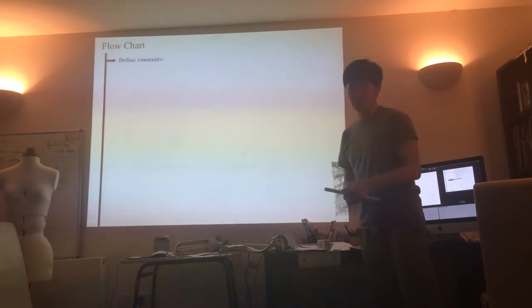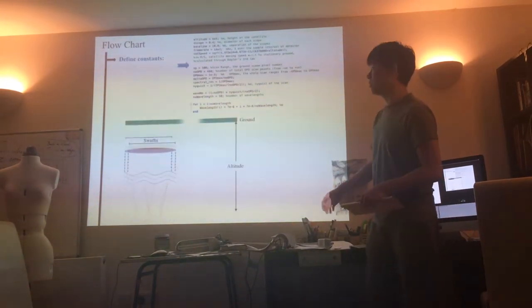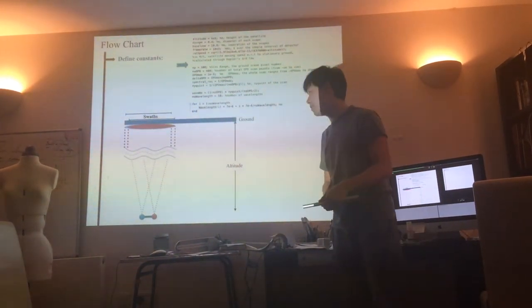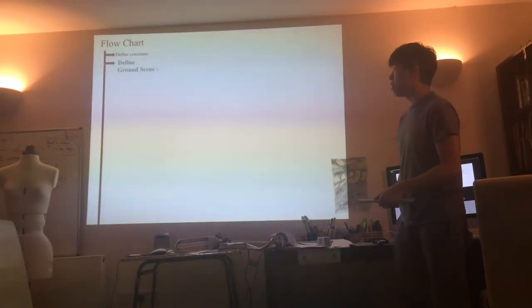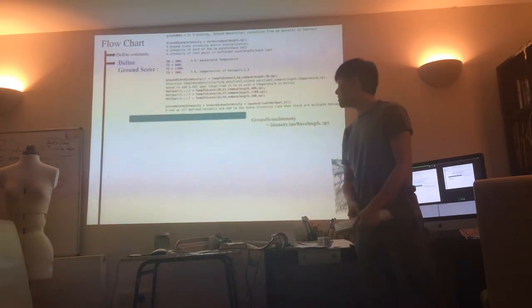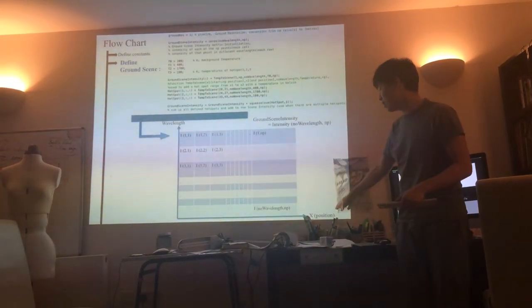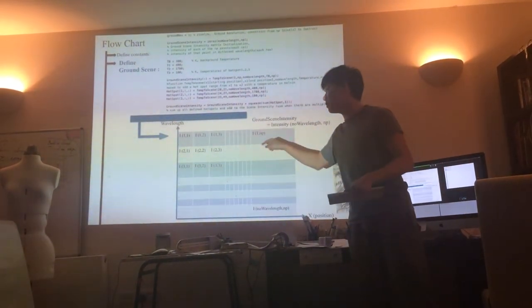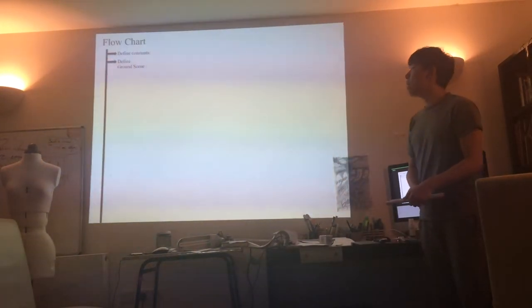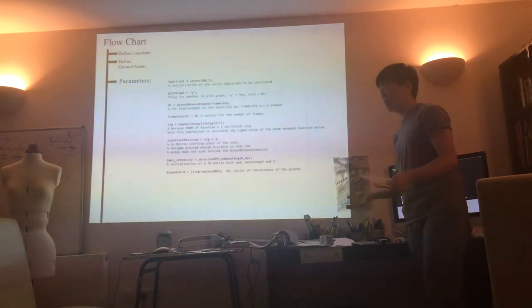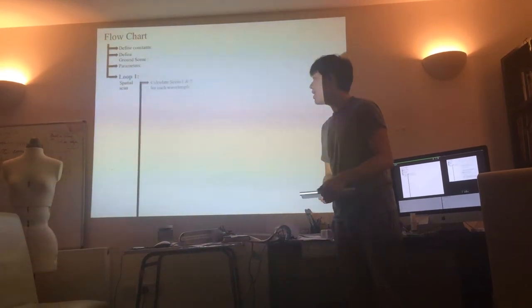Now, going to my simulation. First, I have to define all the constants, basically telling the computer we have this situation. Then I define the ground scene. The ground scene is defined as wavelength on the y-axis and position on the x-axis, with every term the intensity for different wavelengths and positions. Now I define some parameters which I later would use in my program, some global constants.